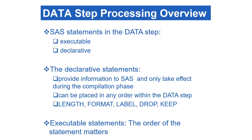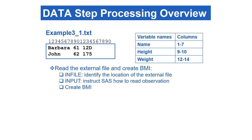The SAS statements in the Datastep can be categorized as executable or declarative. Declarative statements are used to provide information to SAS and only take effect during the compilation phase. Declarative statements such as length, format, label, or drop can be placed in any order within the Datastep. On the other hand, the order in which executable statements appear in the Datastep matters greatly. Program 3.1 illustrates how Datastep processing works. This program reads raw data from the text file example3-1.txt and creates one variable, BMI. Example3-1.txt contains two observations and three variables: name, height, and weight.